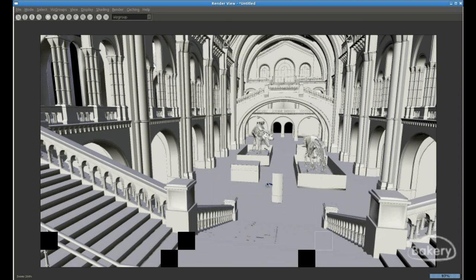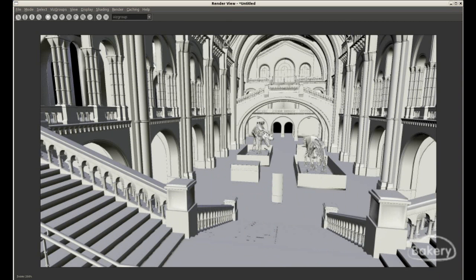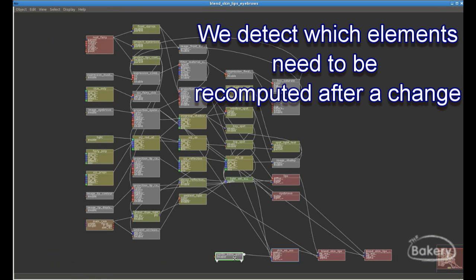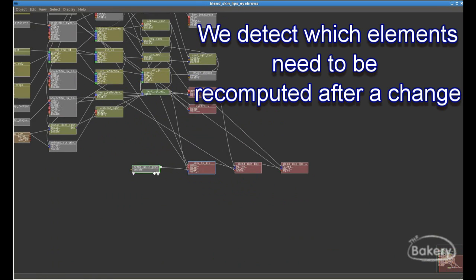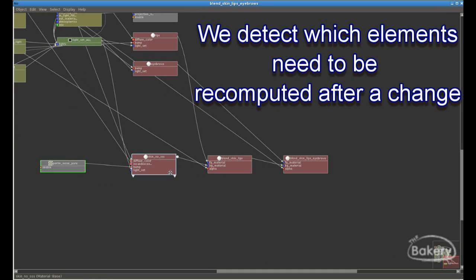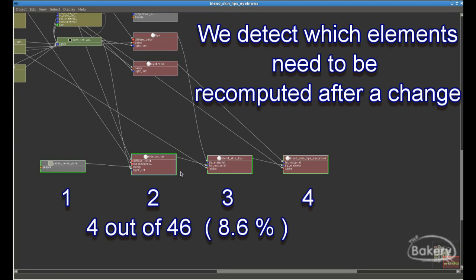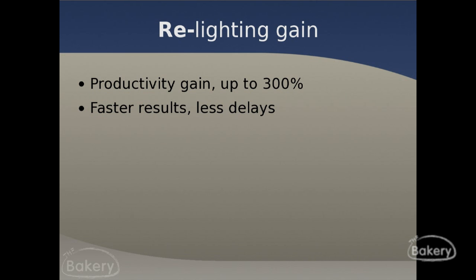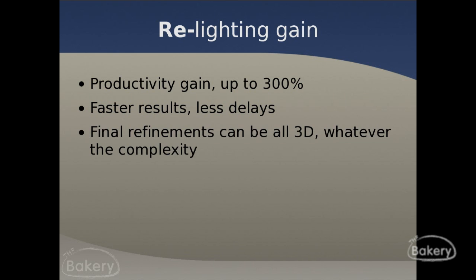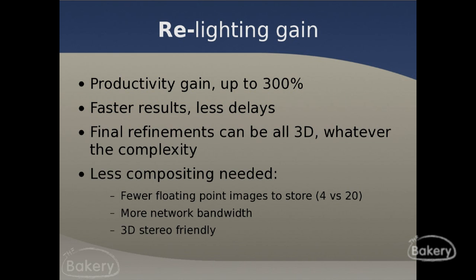This technology allows Relight to be smart about caching, to avoid redoing the same computation multiple times, making it very fast. With these technologies, we estimate that Relight improves productivity, efficiency, and turnaround times up to 300%.